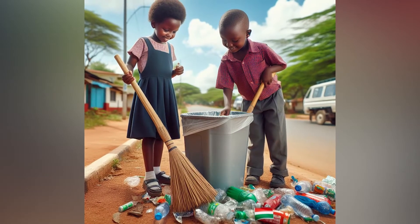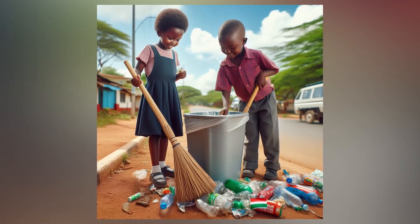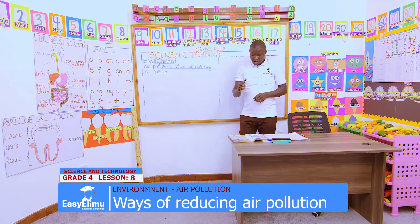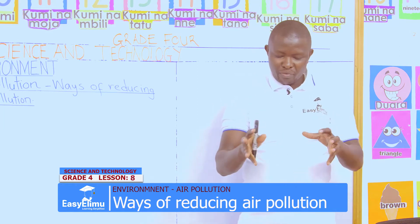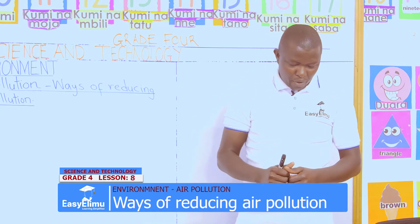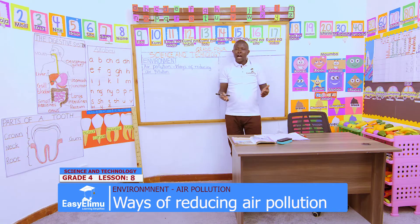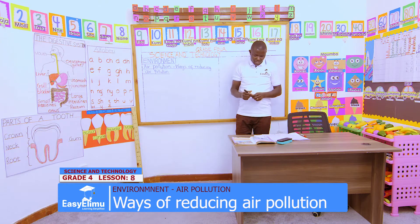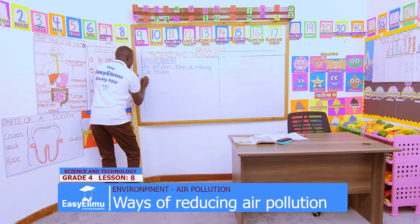And Tom, the last two pictures — boys and girls sweeping, and afterwards they collect the litter and put it properly in the dustbin. That is correct. Now in groups, can you tell me ways of reducing air pollution from those pictures? What have you learned? Can we start from you, John?